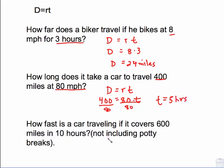Third scenario, how fast is a car traveling if it covers 600 miles in 10 hours? So 600 miles, that's a unit for distance. In 10 hours, that's the time. What I don't have is the rate. Divide both sides by 10 and you're going to get a rate of 60 miles per hour.